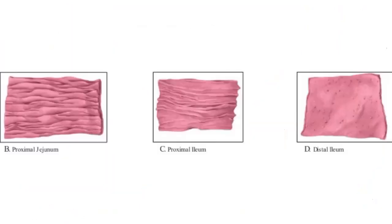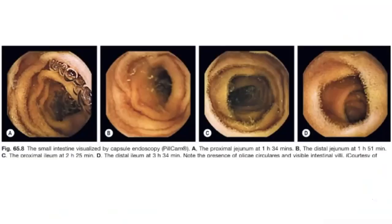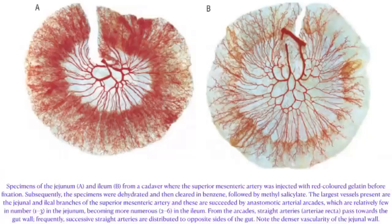The mesentery is thicker in the jejunum and thinner in the ileum. There are numerous plicae circularis in the jejunum but less prominent ones in the ileum, which has numerous Peyer's patches instead. The proximal jejunum has more prominent plicae circularis; the proximal ileum and terminal ileum show progressively less prominent folds. In the terminal ileum, villi can be clearly observed.